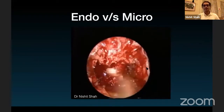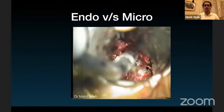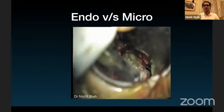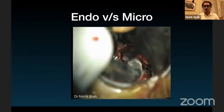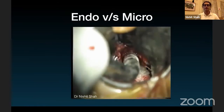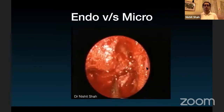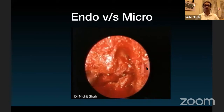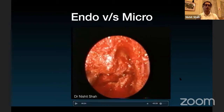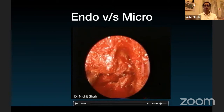Looking back at when we still did some microscopy — the microscopic view feels very restricted. The vision is nowhere as good as the endoscopic view, and it's a struggle to see the periphery or work there. Most people now agree that for midline tumors, endoscopy is significantly better — both in terms of visualization with a panoramic view, magnification, and the ability to look around corners.